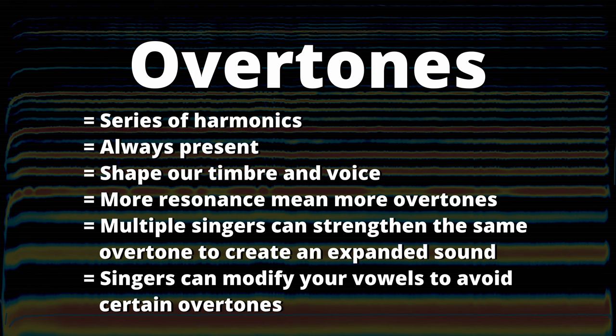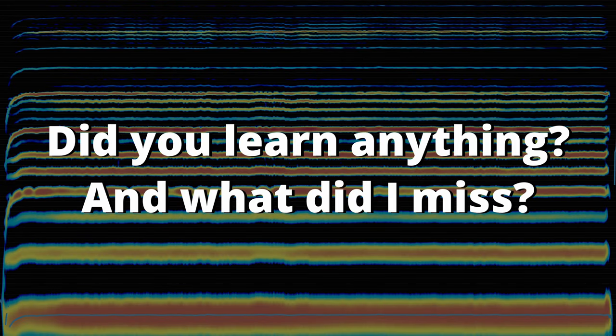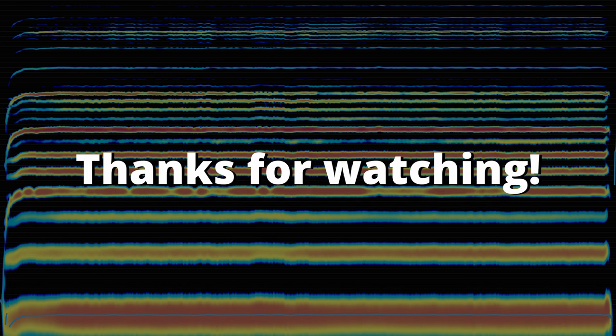So to summarize: overtones are a series of harmonics floating on top of the note being sung, and they are always present in some shape or form. The overtones are what shapes our timbre and the overall sound of our voices. The more resonant your voice is, the more overtones you produce, and each voice part can strengthen the same overtones, creating this expanded sound. As a singer, you can modify your vowels to avoid certain overtones that might be distracting from the sound image. And although this analysis didn't make me a godlike singer like Tim Warwick, it helped explain to me why super talented singers like him sound the way they do. I hope you found this video interesting — make sure to check out all my other Barbershop Theory videos. See you next time!